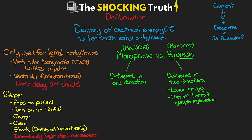The maximum energy for monophasic is 360 joules, while for biphasic the maximum is only 200 joules. Current recommendations are to deliver the shock and then immediately resume chest compressions. The recommended energy steps for the initial and each successive shock for adults start at 120 joules, then 150 joules, then 200 joules — and any successive shocks after that continue at 200 joules. For internal defibrillation, much less energy is used: starting at 5 joules, then 10, 20, 30, and finally 50 joules, staying at 50 if you reach that point.